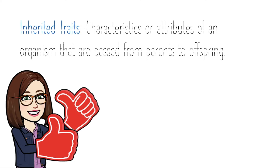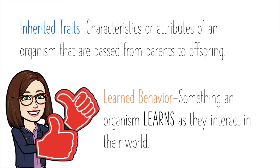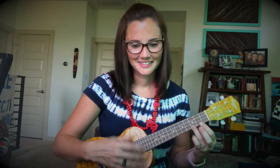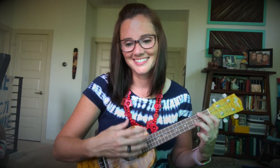So today we have talked about inherited traits — characteristics or attributes of an organism that are passed from parents to offspring — and we've also learned about learned behavior — something an organism learns as they interact with their world. I know we learned a lot today, and I hope that you now know the difference between inherited traits and learned behaviors. Thank you for studying with me today. Until next time.